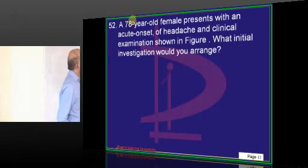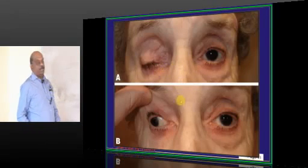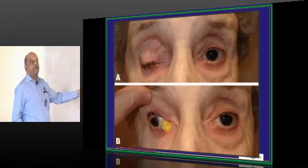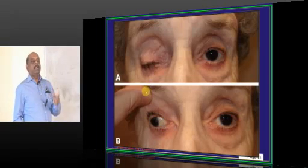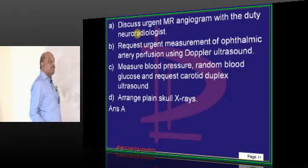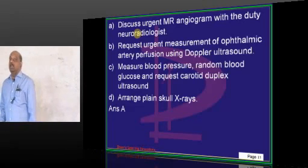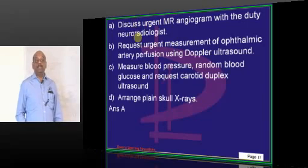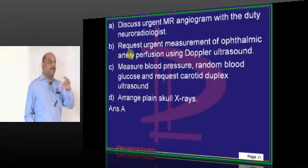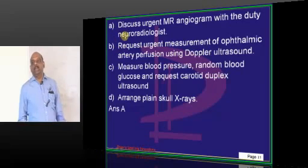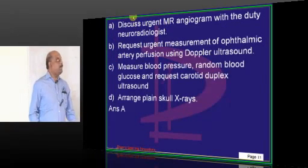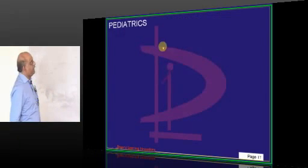A 78-year-old female presents with acute onset of headache. On clinical examination she has ptosis, the eye is abducted, and the pupil is constricted. Whenever you have a third cranial nerve palsy with a constricted pupil and sudden acute onset headache, you should think of a surgical cause for oculomotor palsy — specifically a posterior communicating artery aneurysm compressing the oculomotor nerve as it leaves the midbrain. The next best step is an urgent MR angiogram discussed with a duty neuroradiologist.